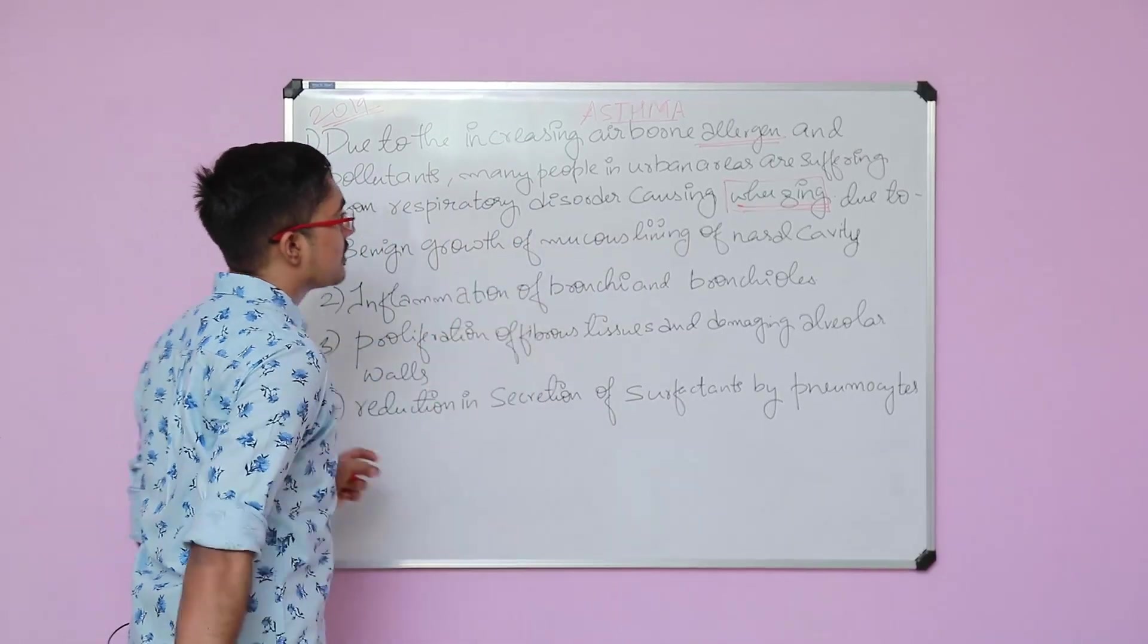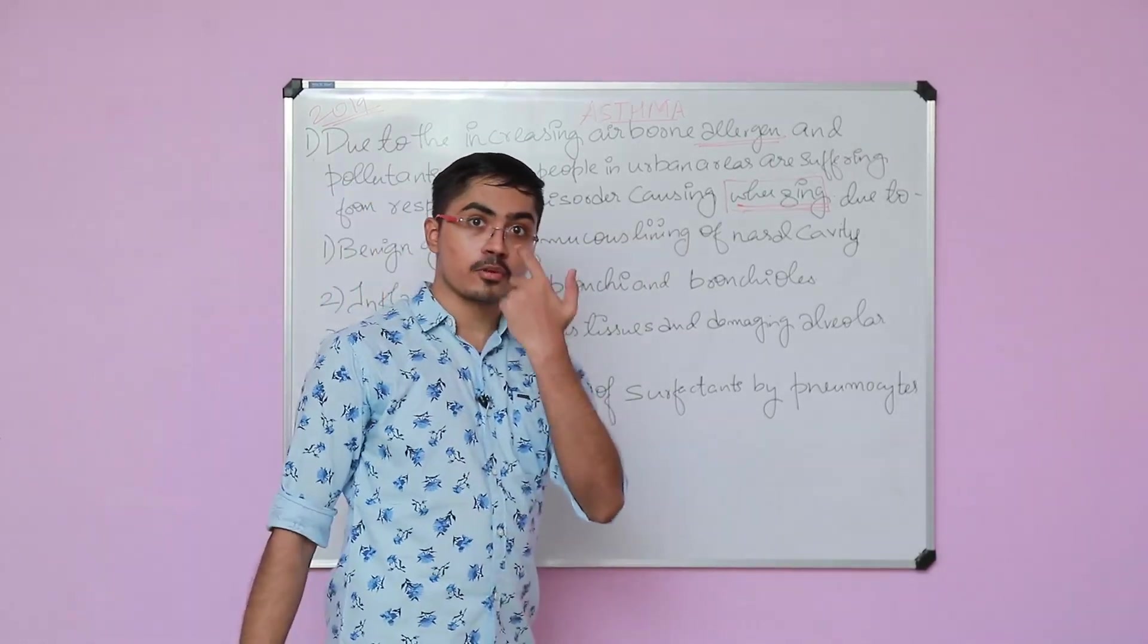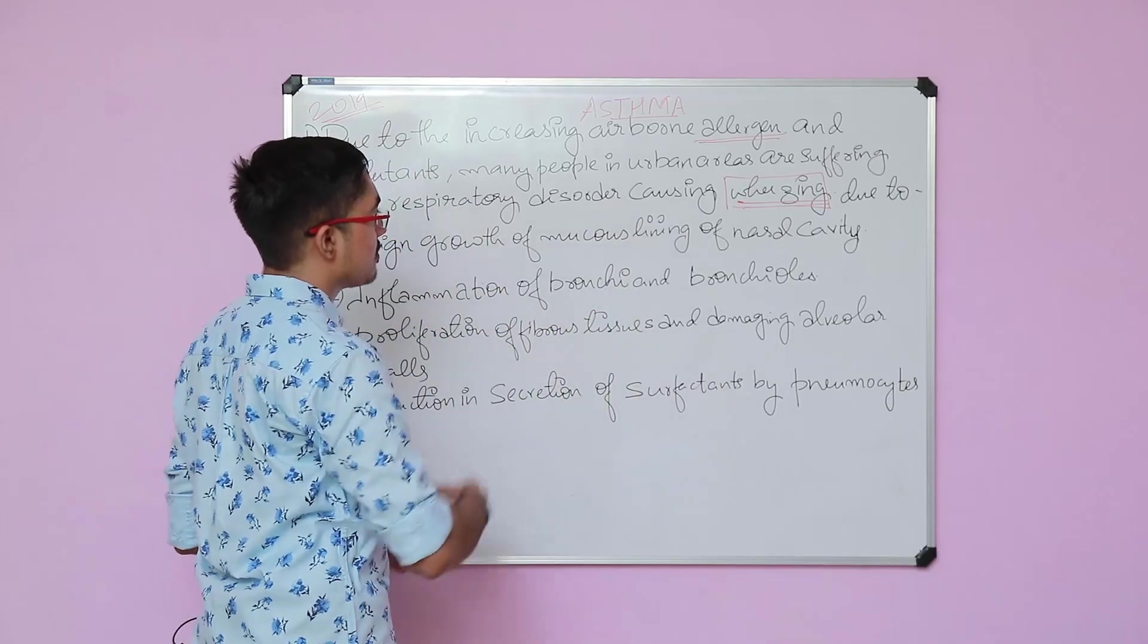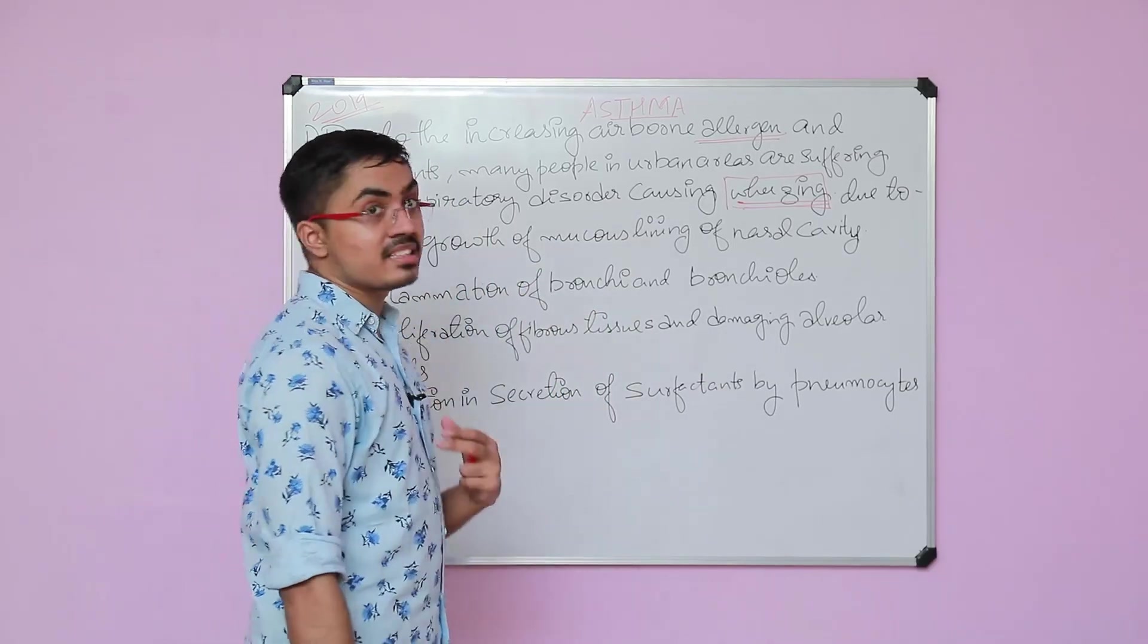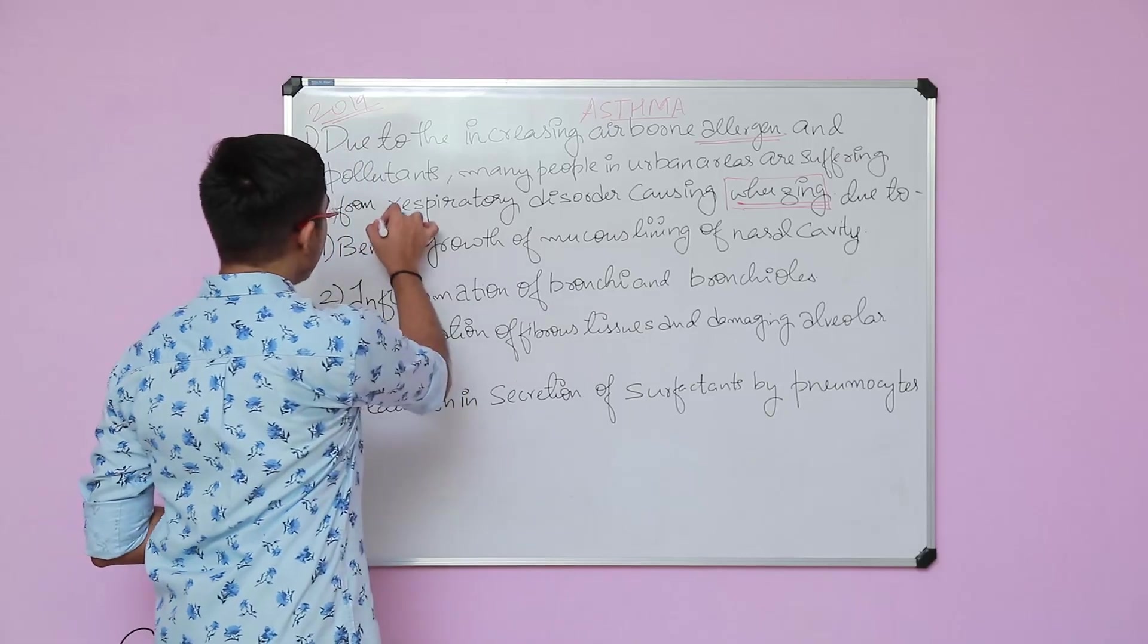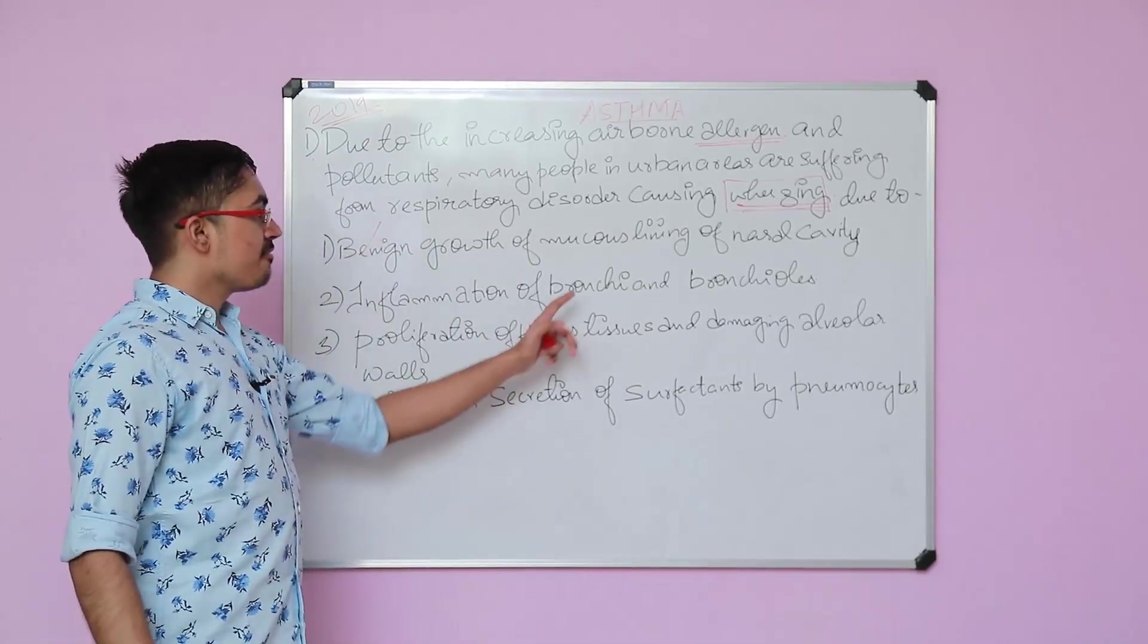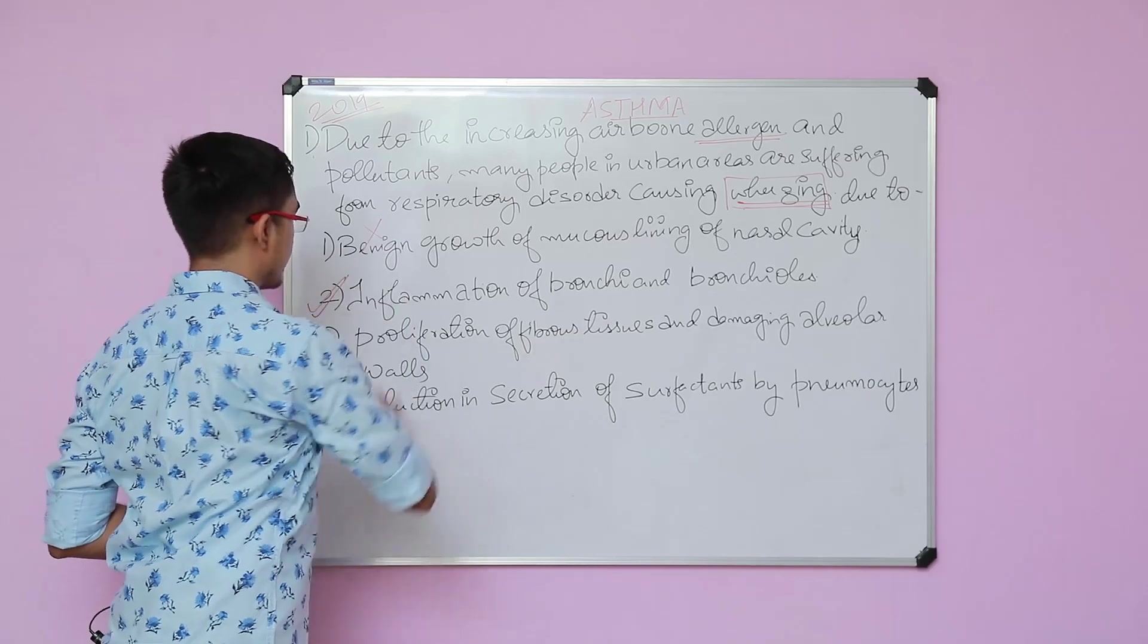If you see all four options: benign growth in the mucus lining of nasal cavity - if a growth is happening, there can be problems in the nose, but that is not asthma. Asthma is something deeper inside. Option one is wrong. Inflammation of bronchi and bronchioles - yes, this is the answer for this question.